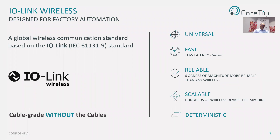So what is IO-Link Wireless? IO-Link Wireless is an extension of the IO-Link standard. It's a global wireless communication protocol for real-time control and monitoring. It enables cable-grade connectivity, but without the cables, and it's completely compatible with IO-Link devices.